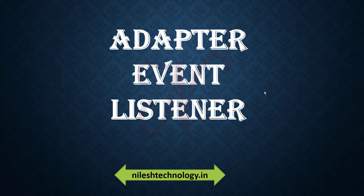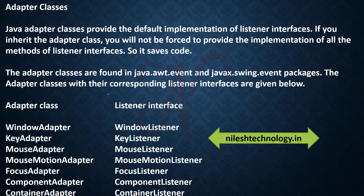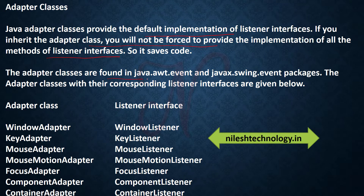In this video we will see another component: the adapter, events, and some listeners. These are very important in AWT and Swing. The adapter class provides the default implementation of a listener interface. If you inherit the adapter class, you will not be forced to provide the implementation of all the methods of a listener interface, so it saves code.